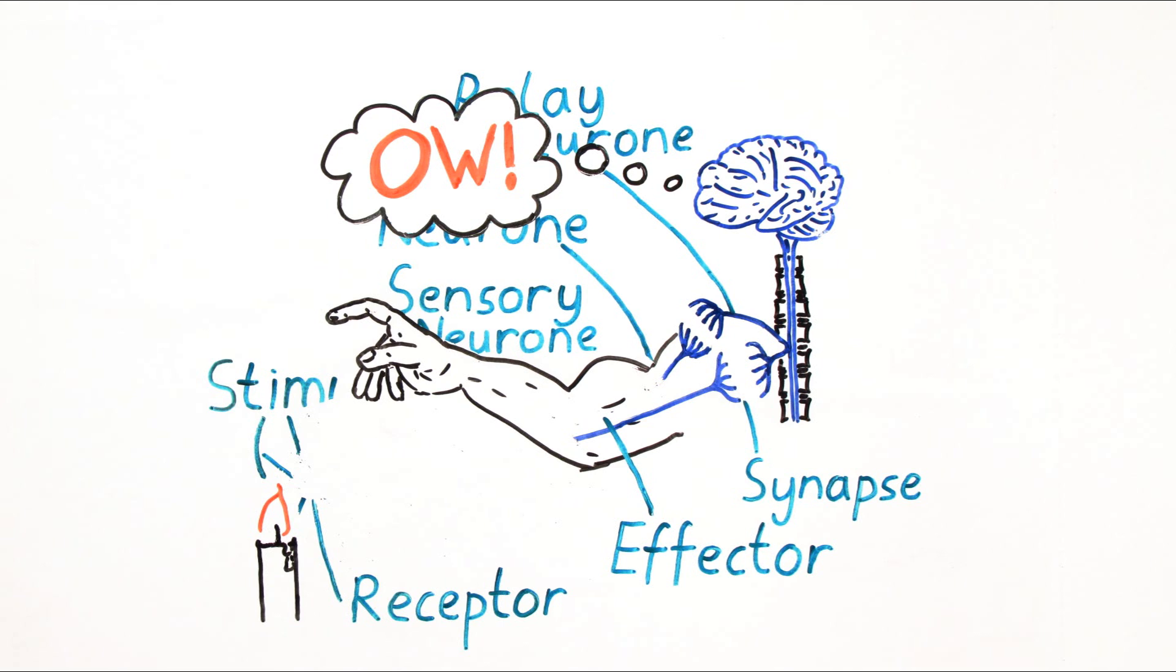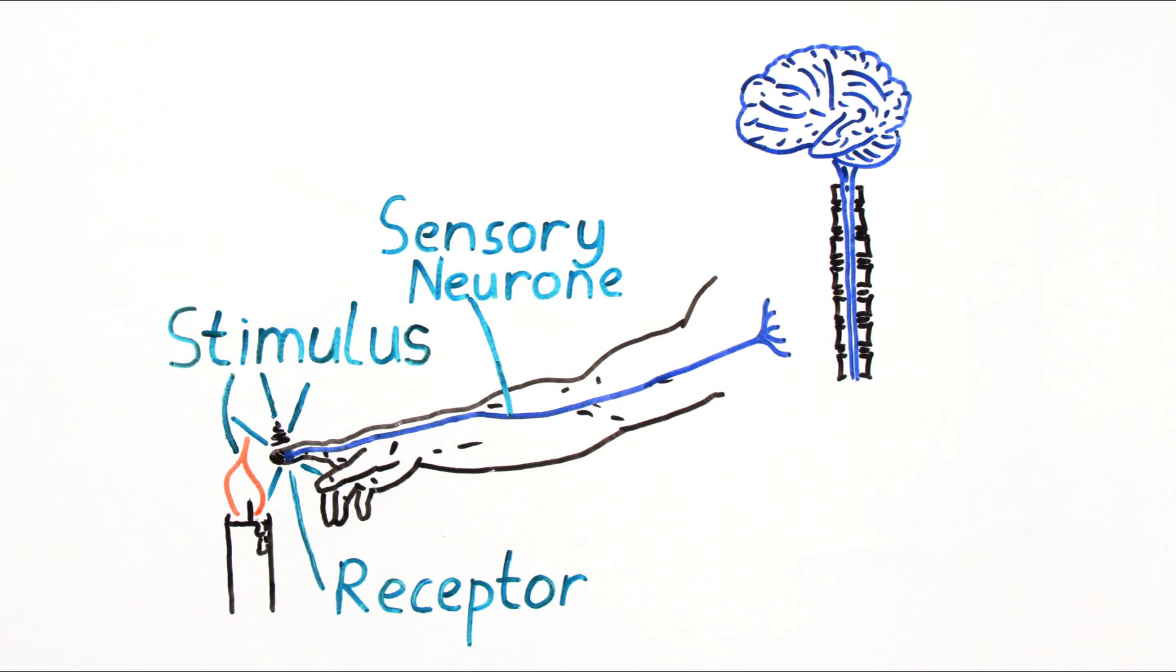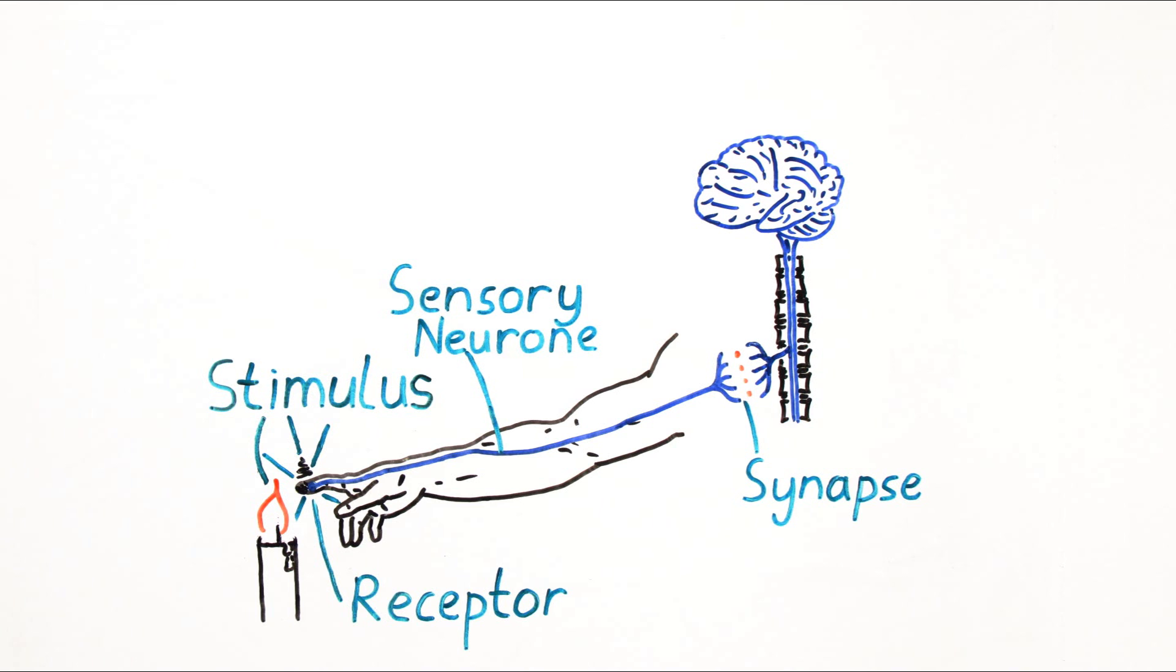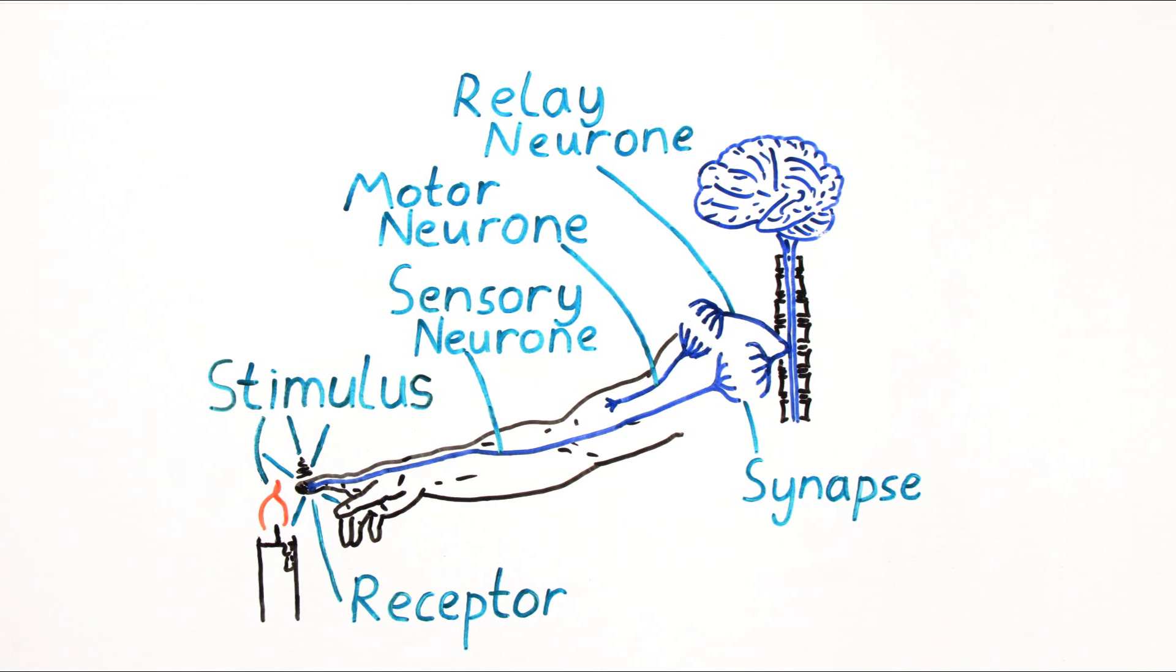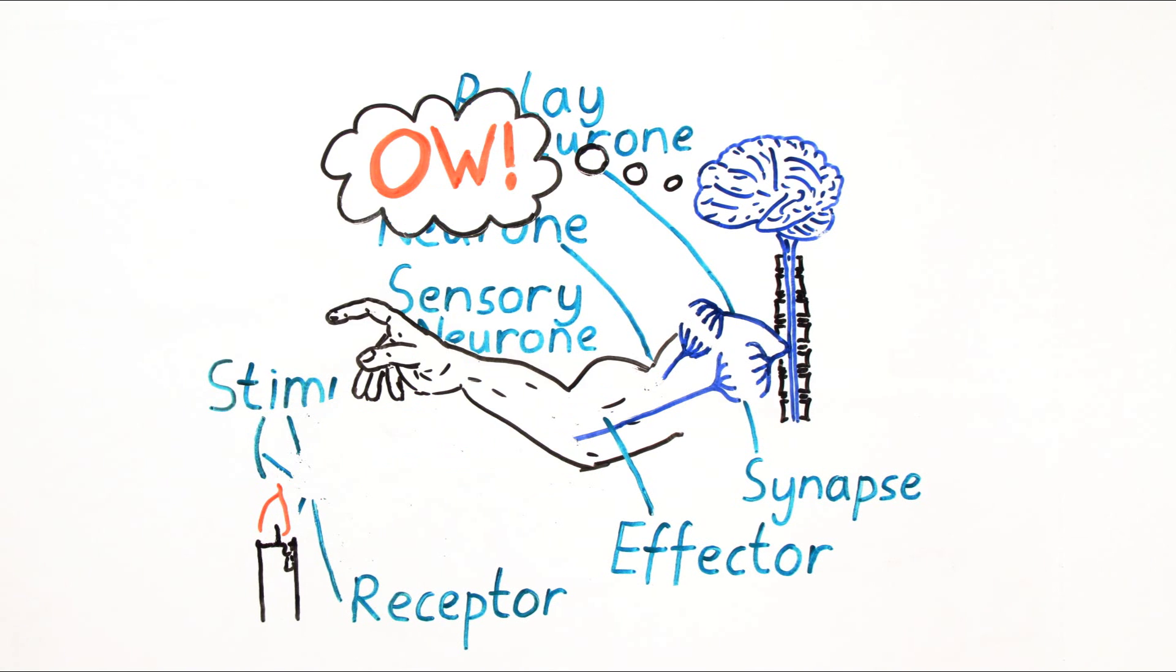This whole process is known as a reflex arc. And let's just run through that quickly one more time, just so that you get familiar with it. The receptor detects the hot object. It passes that information to a sensory neuron. The sensory neuron passes the information via a synapse to a relay neuron. The relay neuron passes the information via another synapse to a motor neuron. And the motor neuron passes the information to an effector, such as a muscle, which causes you to jerk your hand out of the way.